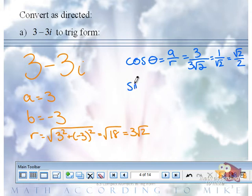Sine of theta is B over R is negative 3 over 3 square root of 2. Notice the only difference is this one's negative, so we're going to end up with negative radical 2 over 2.